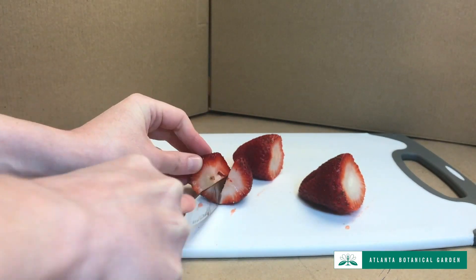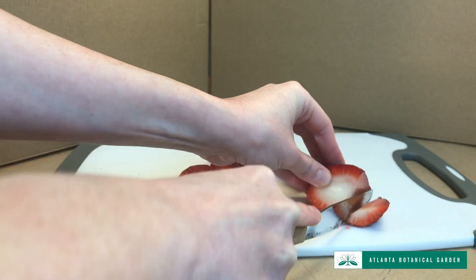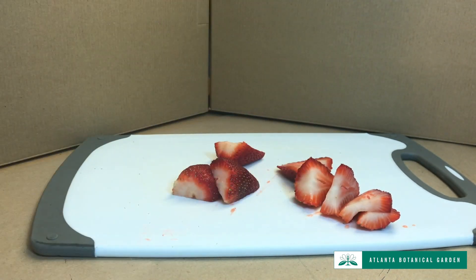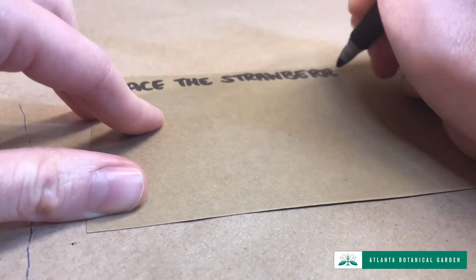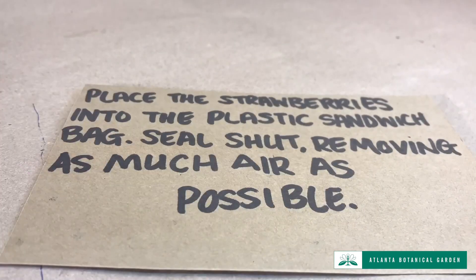If your strawberries are large, you may want to cut them into smaller sizes to make them easier to mush in the upcoming steps. Place the strawberries into the plastic sandwich bag. Seal shut, removing as much air as possible.